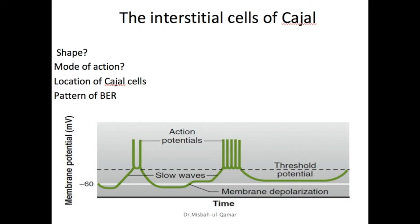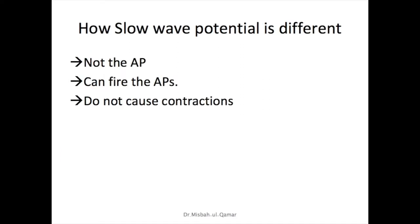Slow waves usually do not cause muscle contraction; instead, they excite the appearance of intermittent spike potentials, and these spike potentials excite muscle contraction. A slow wave potential is different from an action potential — the slow wave itself is not an action potential, but it can give rise to one. Slow wave potentials fire action potentials only when they reach the threshold. In short, slow waves cannot cause muscle contractions unless they generate action potentials or cause depolarization to the contraction threshold.